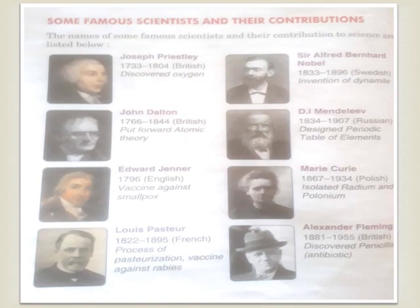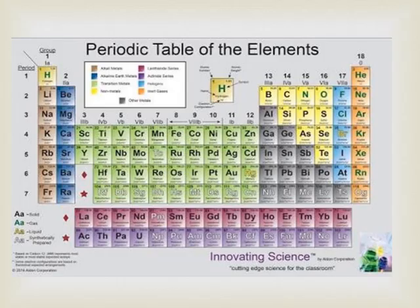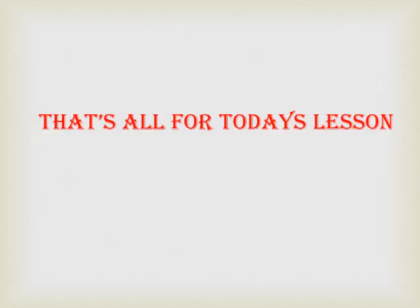Let us see the periodic table, which was designed by Mendeleev. This is the periodic table of elements — you can see hydrogen, lithium, sodium, potassium, all shown in this periodic table, placed according to their atomic number. Their atomic weight is also given here in the periodic table.